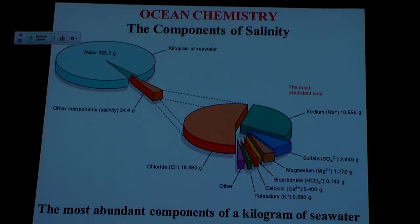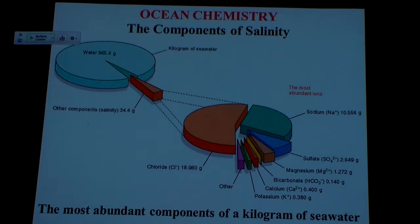Sodium and chloride, plain old table salt — you saw it as halite in mineral labs — is the main component of the salinity of the ocean.